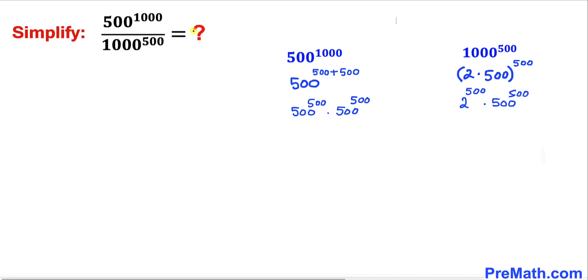So therefore our given expression now could be written as—the numerator I am going to replace it by this one. I can write 500 to the power 500 times 500 to the power 500, divided by—now I am going to replace this denominator part by this simplified one.